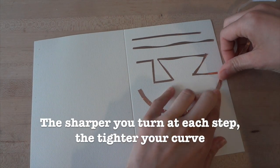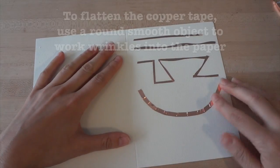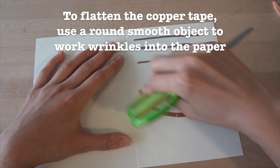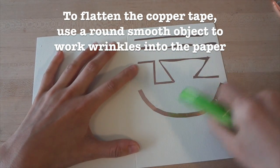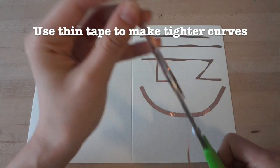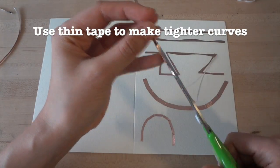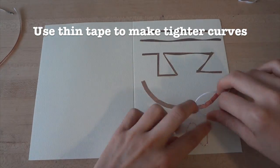The more sharply you turn at each step, the tighter the curve. To flatten the wrinkles in your copper tape, you can use a smooth object like the plastic handle of scissors to work the wrinkles down into the paper. I've found that the thinner the tape you use, the easier it is to make tighter curves. Try experimenting with different widths and see what patterns you can come up with.